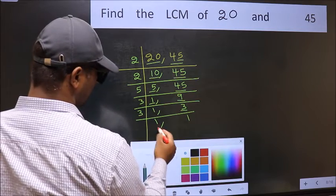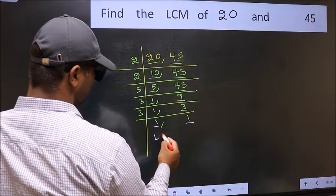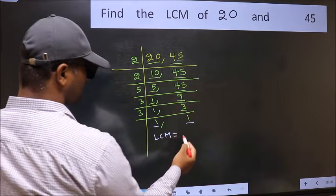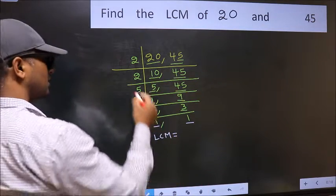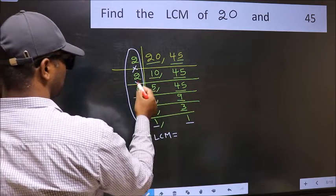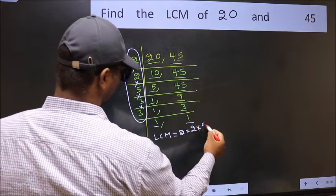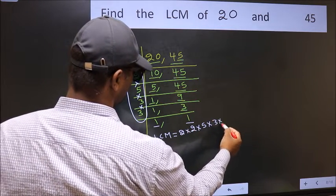So we got 1 in both the places. So our LCM is the product of these numbers. That is 2 into 2 into 5 into 3 into 3.